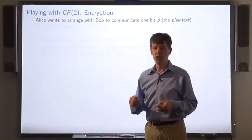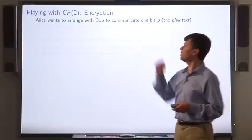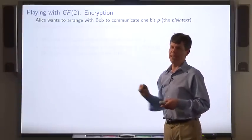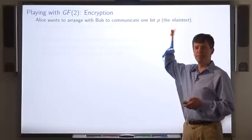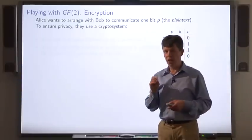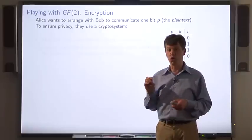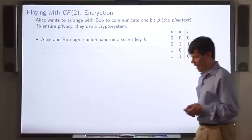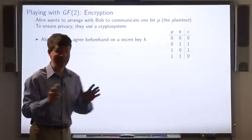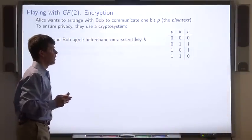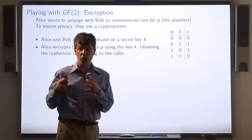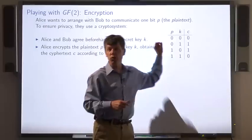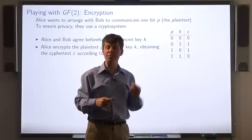Here's an application of GF2 to cryptography. Suppose Alice wants to communicate with Bob. She only wants to communicate one bit, called p, the plain text. So they use a cryptosystem to ensure privacy. Here's the table describing the cryptosystem. Alice and Bob agree beforehand on a secret key k. And Alice will encrypt her plain text p by using this table to figure out the ciphertext c that she should transmit to Bob.